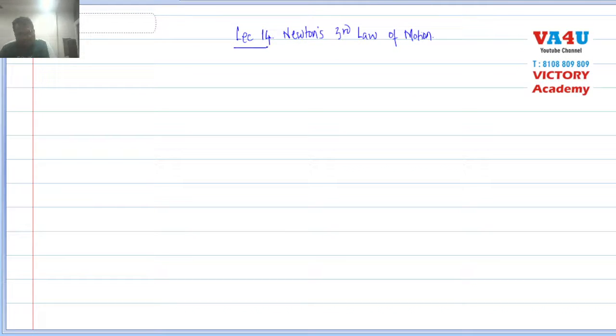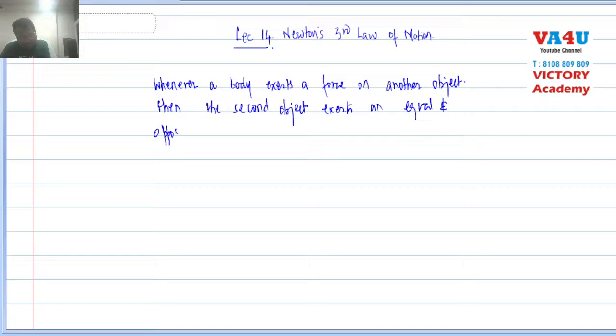We are looking at lecture 14, Newton's third law of motion. What does it say? It says that whenever a body exerts a force on another object, then the second object exerts an equal and opposite force on the first body.